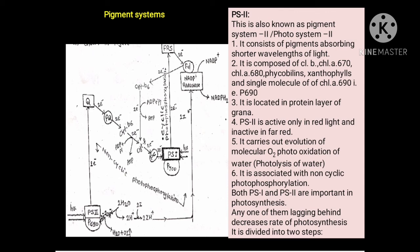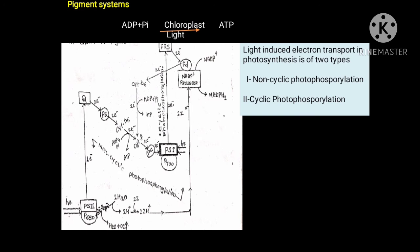Both photosystem first and photosystem second are important in photosynthesis. If any one of them lags behind, it decreases the rate of photosynthesis. Light-induced electron transport in photosynthesis is of two types: first, non-cyclic photophosphorylation, and second, cyclic photophosphorylation.